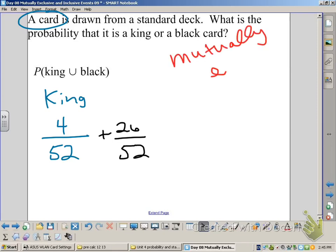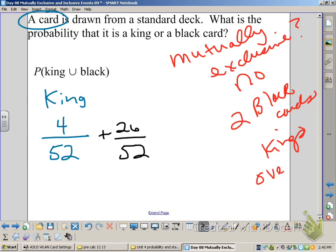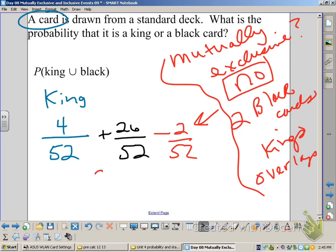Is it mutually exclusive? If you think about it, that answer is going to be no, because two of the kings, half the kings, are going to be black face cards. So what do we do with the overlap? If you think back to that first slide, we're going to have to subtract out the overlap. So if you've thought about that, your answer should be 7 out of 13.